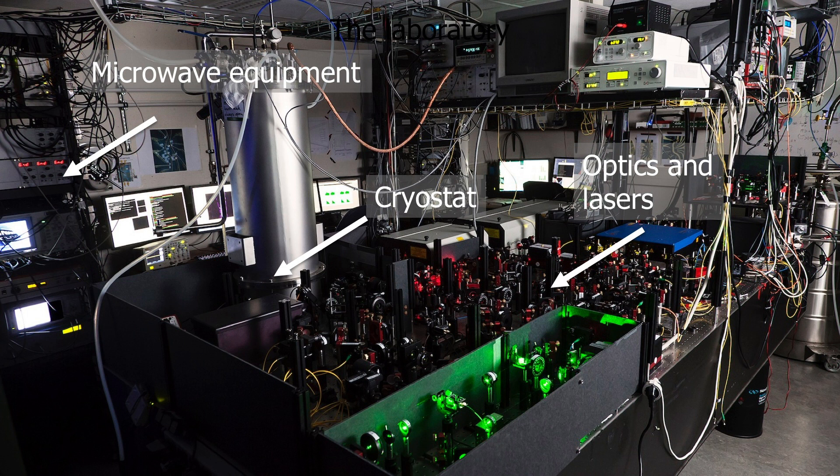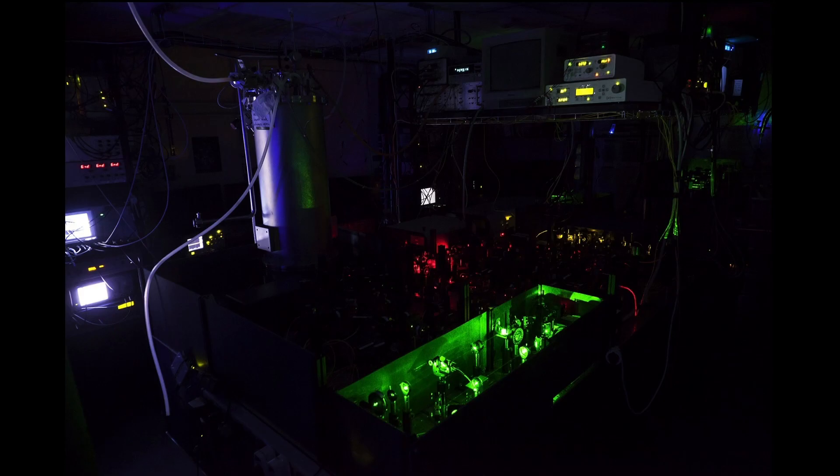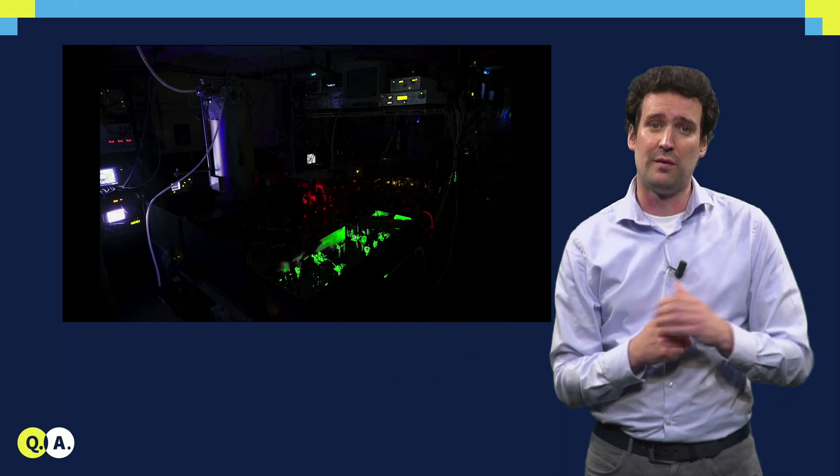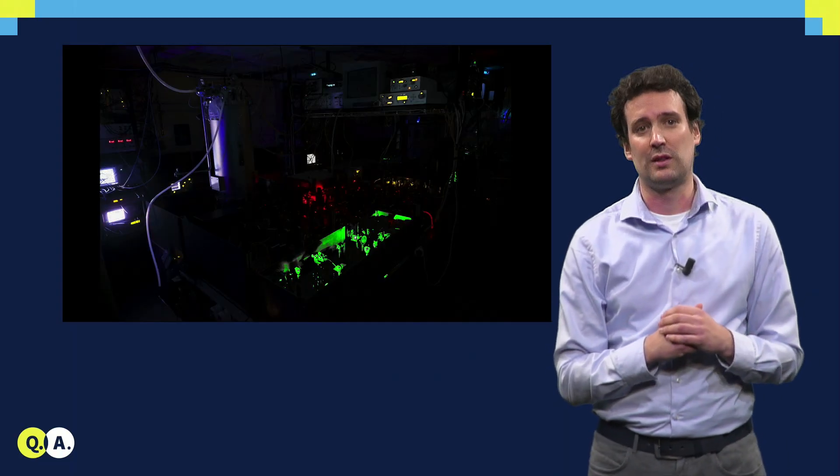This is what it looks like in an actual laboratory. The tube that you see is a cryostat that contains the diamonds, cooled down to 4 Kelvin. You can also see a lot of optics and lasers to measure the spin, and microwave electronics to control it. Of course, in reality, when the system is running, it is dark like this. That's because we have to detect single photons coming from these NV centers.